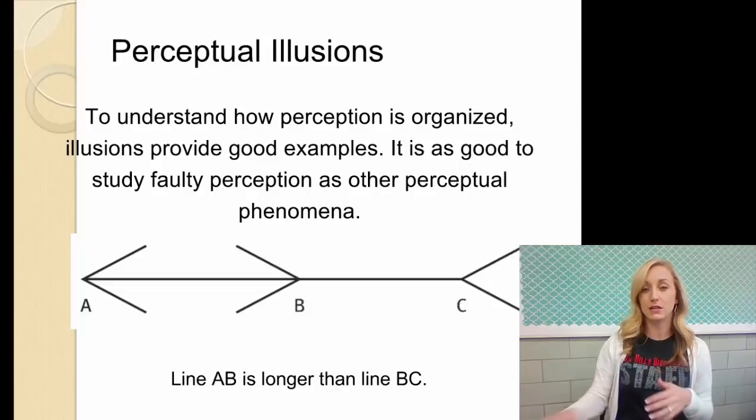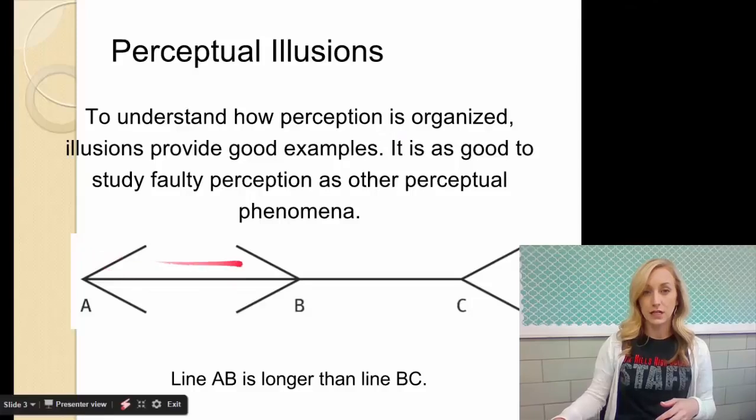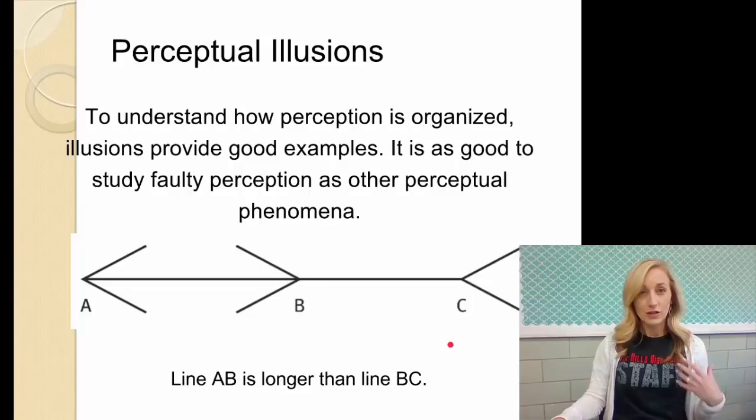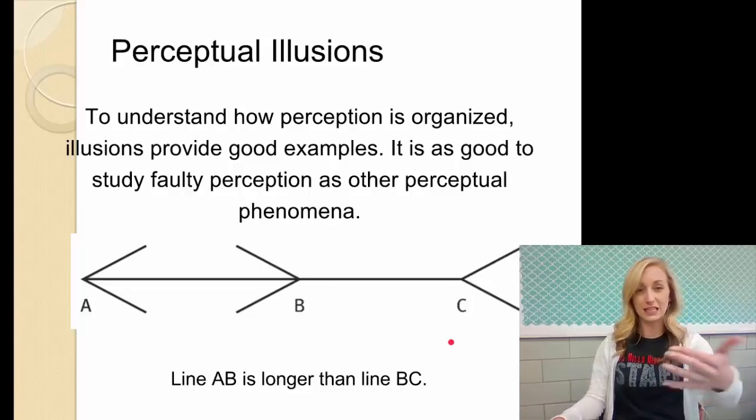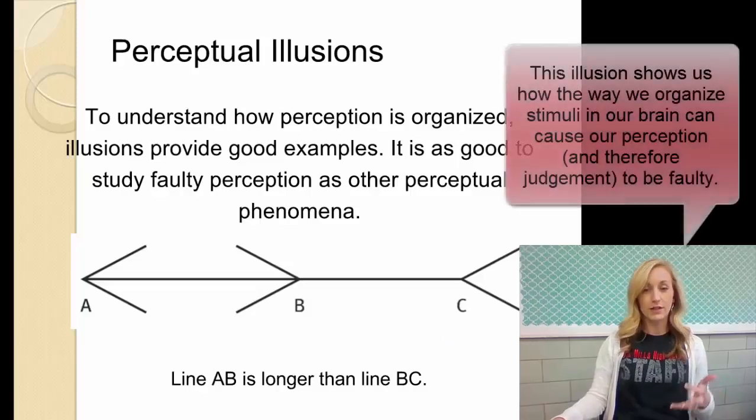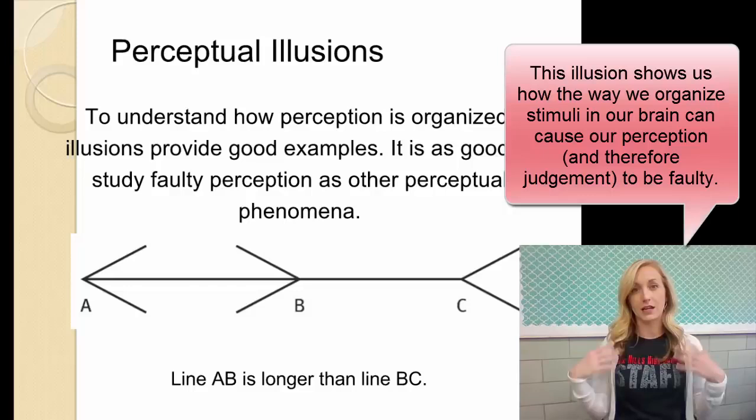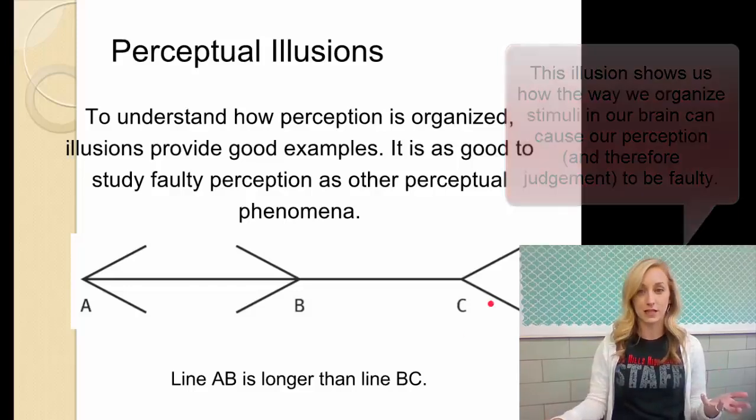For instance, line AB, being over here on the left, and line BC here. It looks like AB is shorter, if not the same length, right? Line AB is actually longer than line BC. So the way that we perceive this is that line AB is shorter, when in actuality it is longer. That's because of different cues that our brain's picking up and making us to perceive the line as shorter.